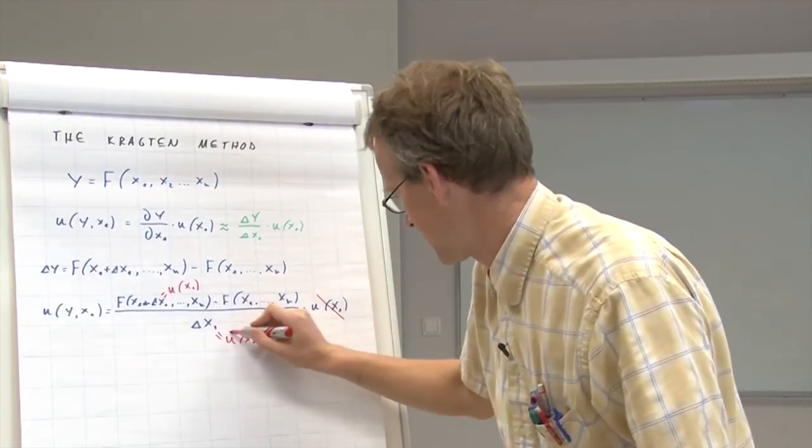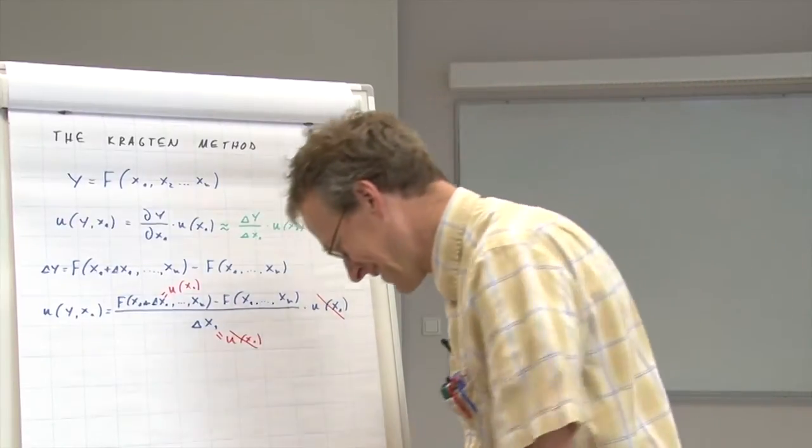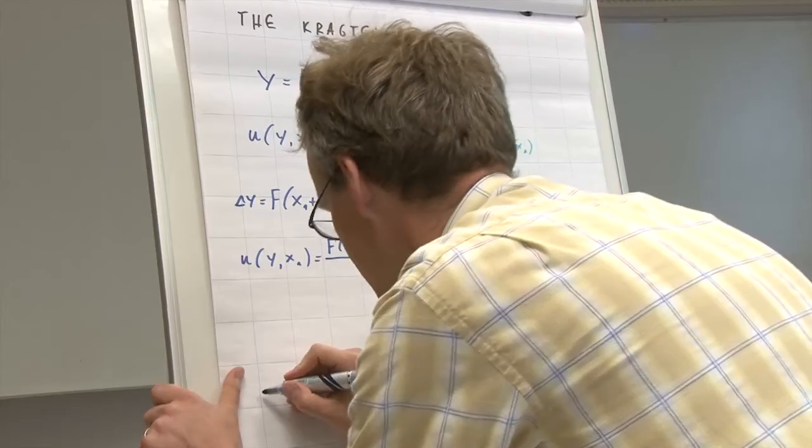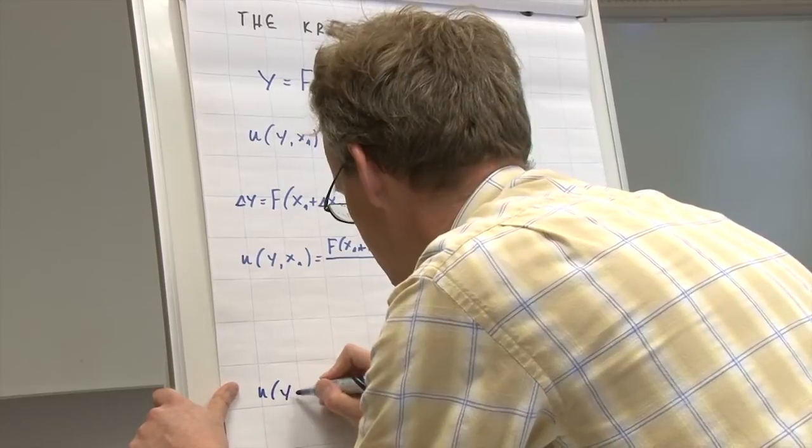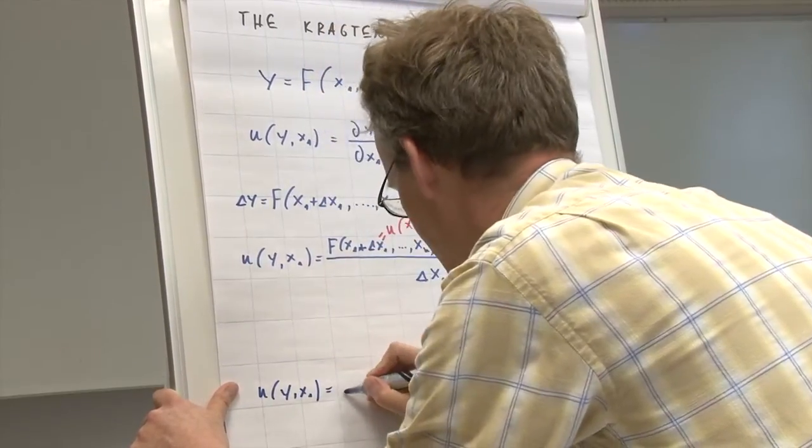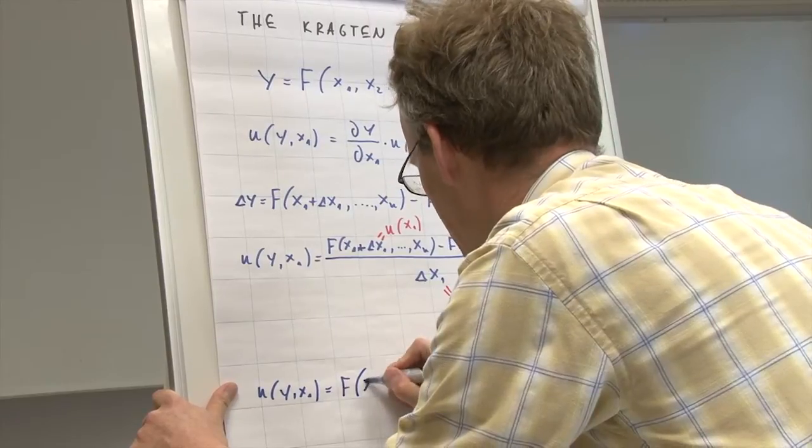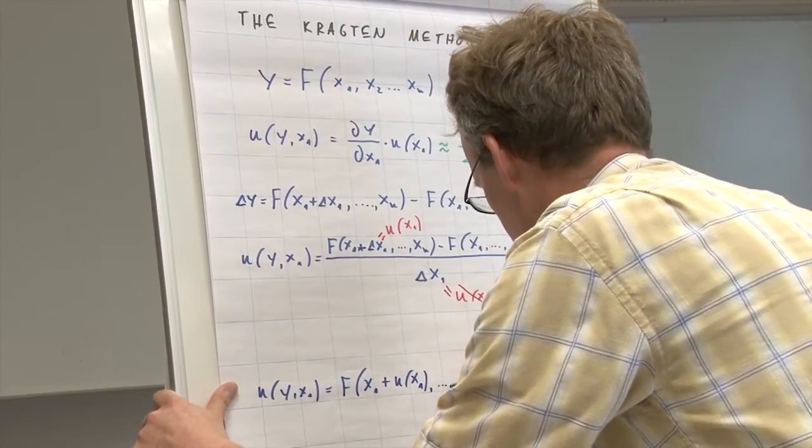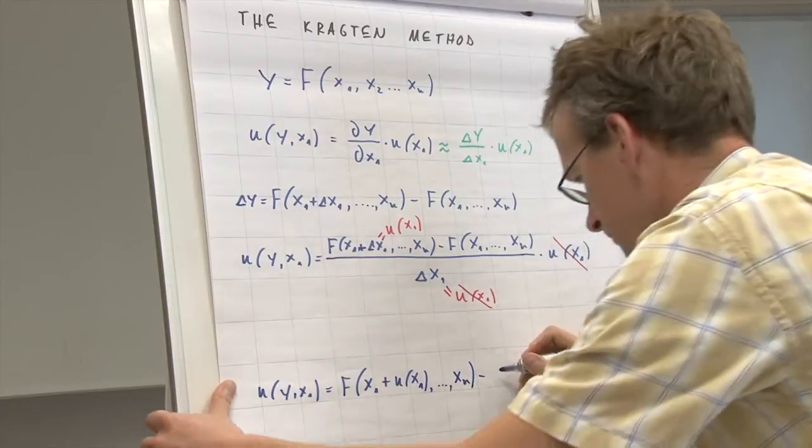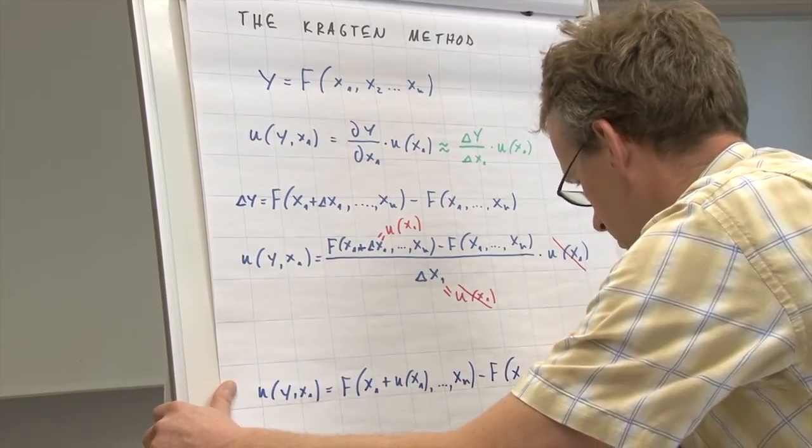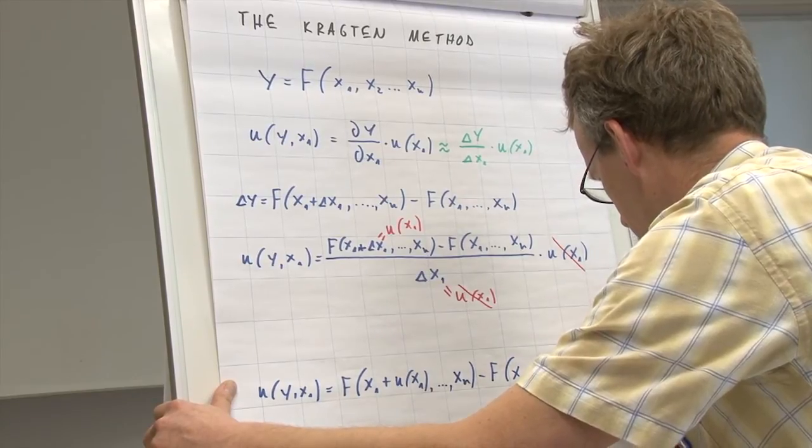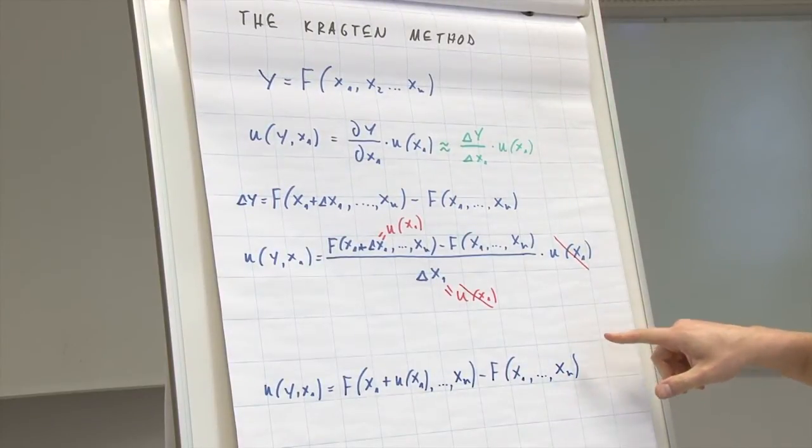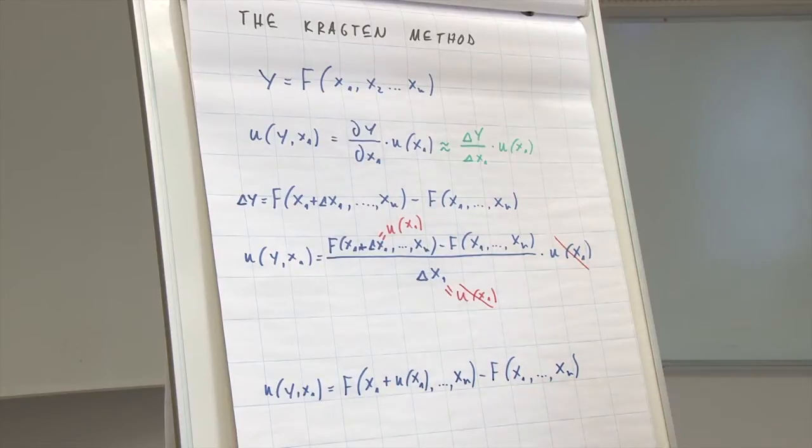The beauty of his proposal is that these two now cancel out, so that eventually the uncertainty component is calculated as follows. This is the way the Kragten approach works.